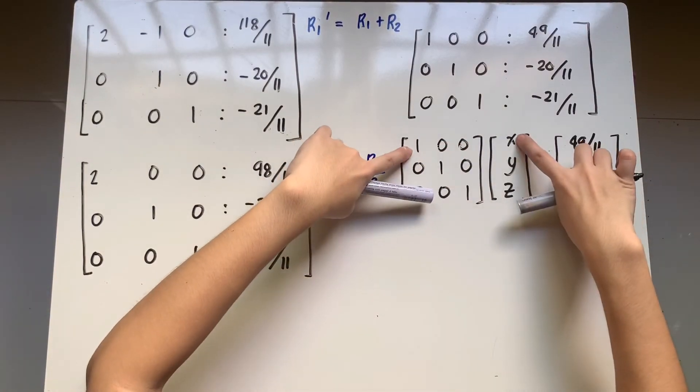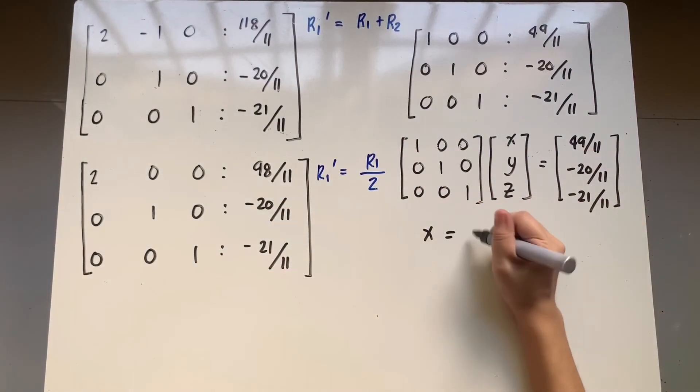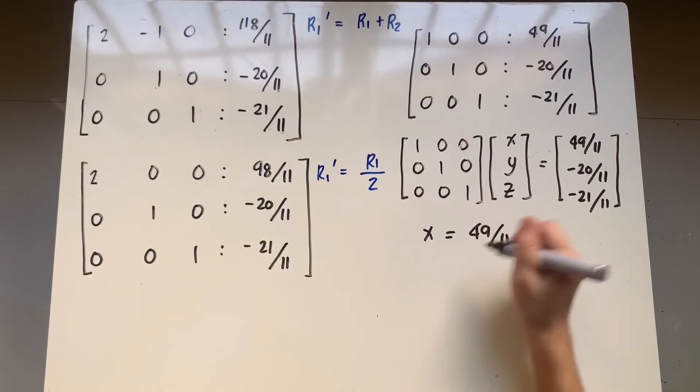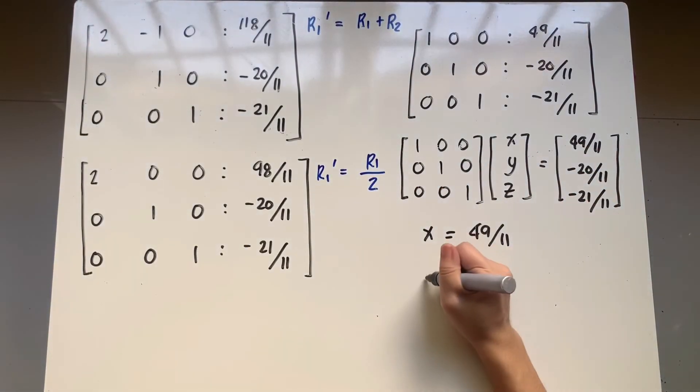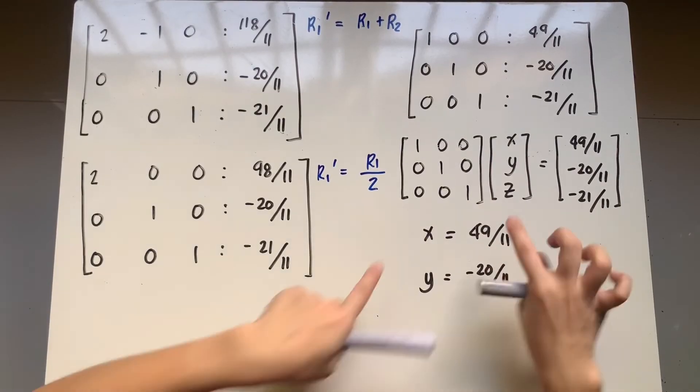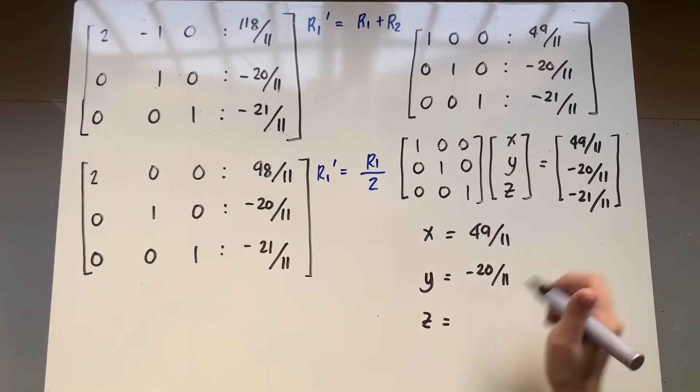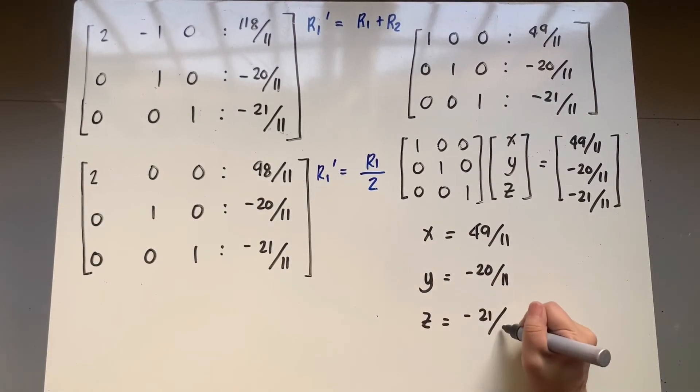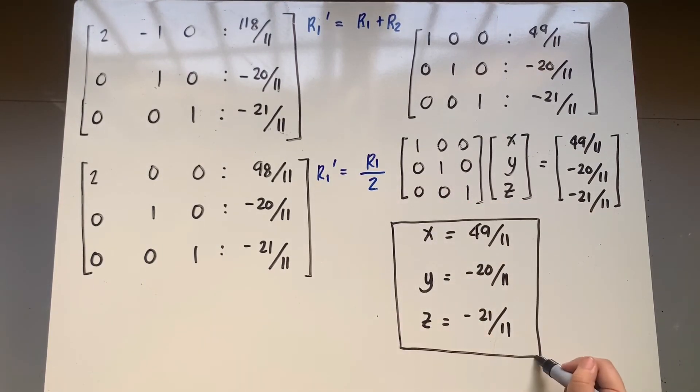So, you have 1x plus 0y plus 0z. So, you have x equals the first constant, that's 49 over 11. You have 0x plus y plus 0z, which means you have y equal to negative 20 over 11. And you have 0x, 0y plus z, which is equivalent to the last constant that we have, it's negative 21 over 11. And this gives us our answers using the Gauss-Jordan Reduction.